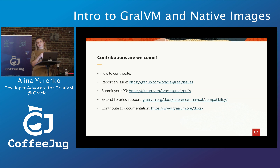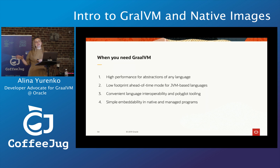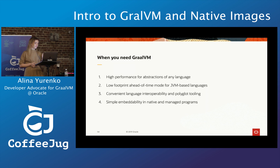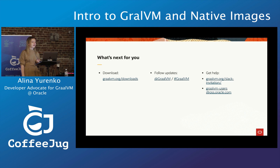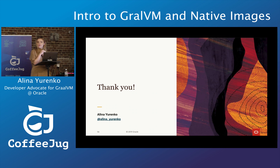Ways to contribute: even if you just report an issue or help with docs, that is very important. To summarize — GraalVM offers high performance for any language, fast startup and low memory footprint for Java via native images, convenient language interop between different languages, and simple embedding in various environments. If you want to get it, download it from graalvm.org; follow us on Twitter for updates, and we have a community Slack and mailing list for direct questions to our team.